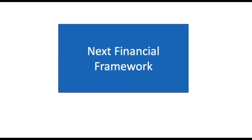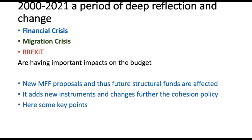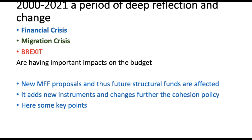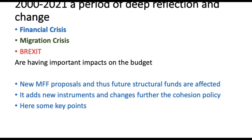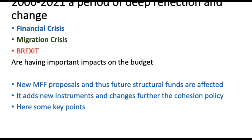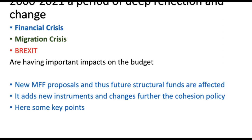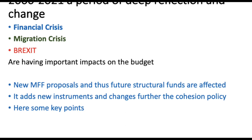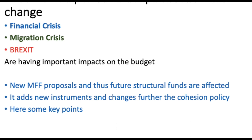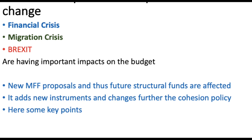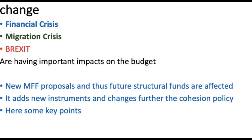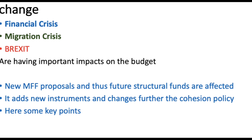Now some pointers about the next financial framework. The 2014–2021 period has been a time of deep reflection and change — the financial crisis was followed by a migration crisis and then Brexit, alongside growing energy and climate change challenges. These disruptions have made the budget need to become more flexible and efficient to adapt to new challenges mid-programming period. The new MFF proposals must take this into account: there is an increase in overall funding but a decrease in economic, social, and territorial cohesion — meaning cohesion policy has been weakened, with a shift from cohesion to competitiveness. Agricultural policy has also been cut, all to beef up security and external action.